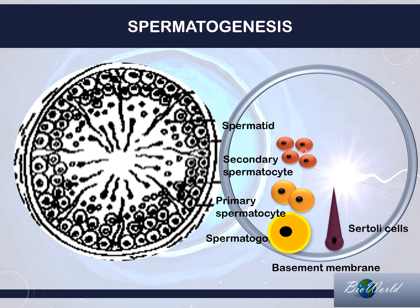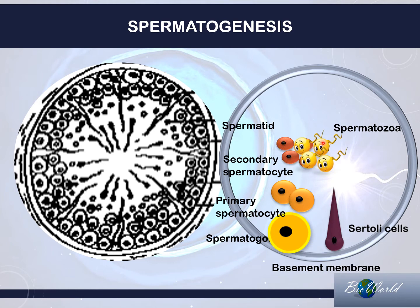Spermatids will then experience differentiation, whereby there will be a change in structure where they will start to develop flagella. Once it has taken this shape, it is called the spermatozoa, or in short, we call it the sperm. These sperms require a lot of glucose to generate ATP to enable them to swim, so these cells will obtain their glucose from the Sertoli cells. This whole process that has just been explained is spermatogenesis.